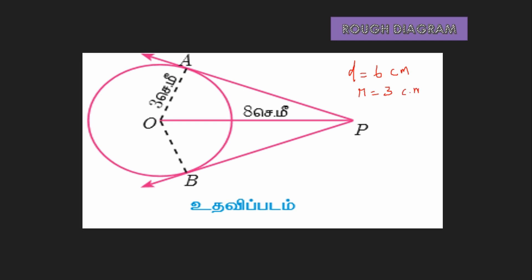Now we have the diameter and radius. The diameter is 6 cm and the radius is 3 cm. The distance from point P to the center is 8 cm. D equals 6 cm and R equals 3 cm.